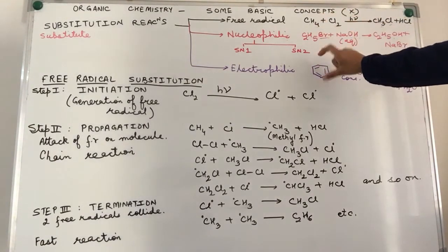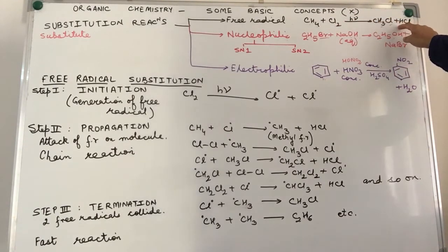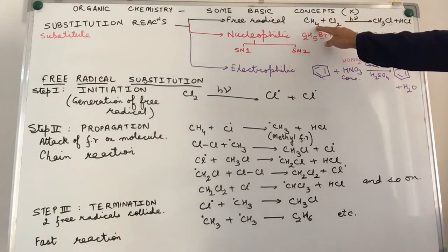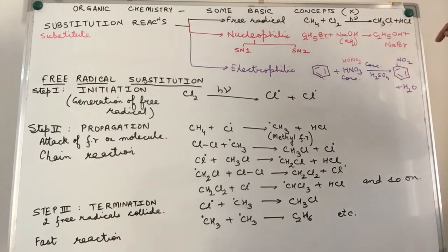So we have broadly classified them into three categories. I have taken one example of each of these categories. So free radical is when an alkane is treated with chlorine in the presence of light. Because free radicals are usually generated in the presence of light, heat or peroxides.